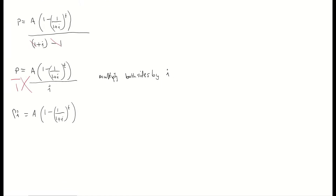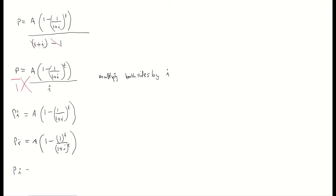The next step is to use my log tables to deal with this power of T. Going to page 21 of my log tables — you can see that if you have a power applied to a whole fraction, it's the same as putting the power on the top and the bottom. Following that rule: IP is equal to A times (1 minus 1^T over (1 plus I)^T). And 1 to the power of anything is just 1, so IP equals A times (1 minus 1 over (1 plus I)^T). So we've dealt with our power there.